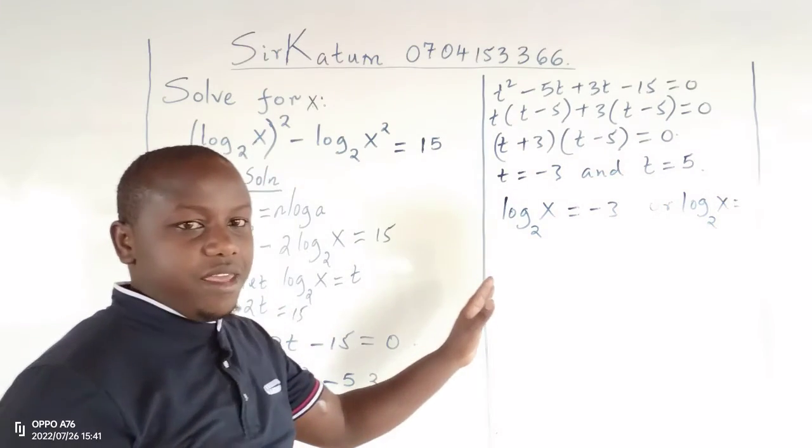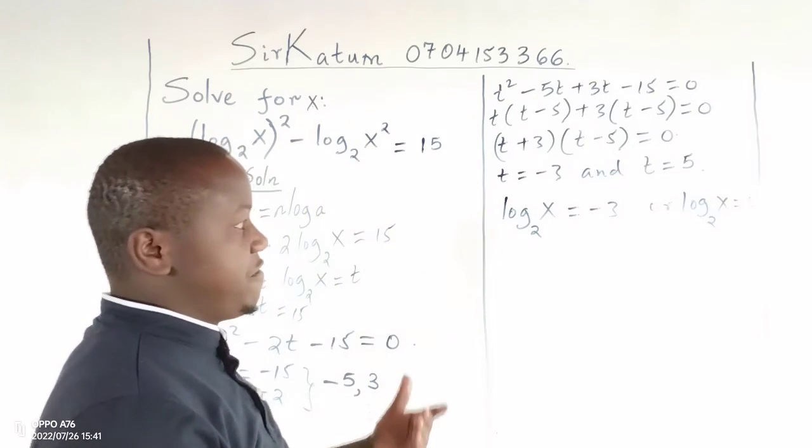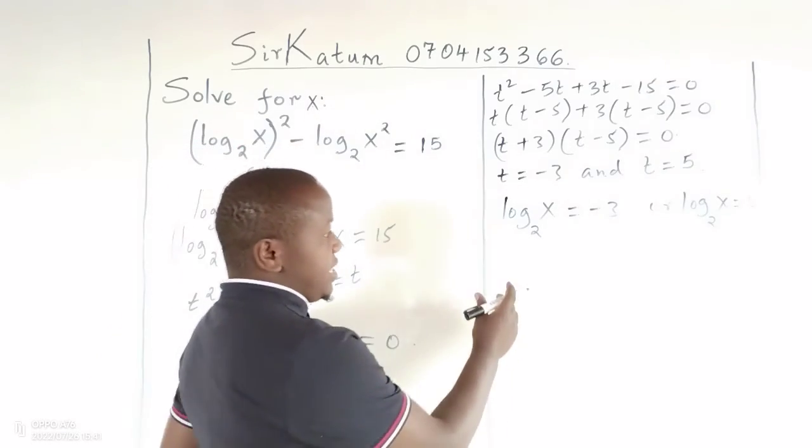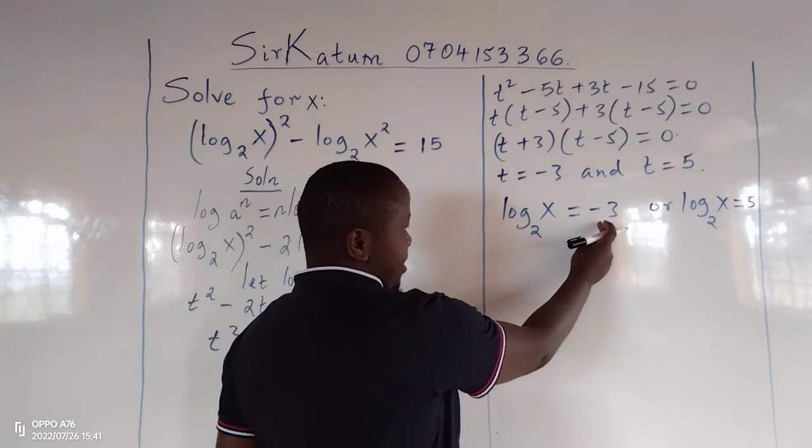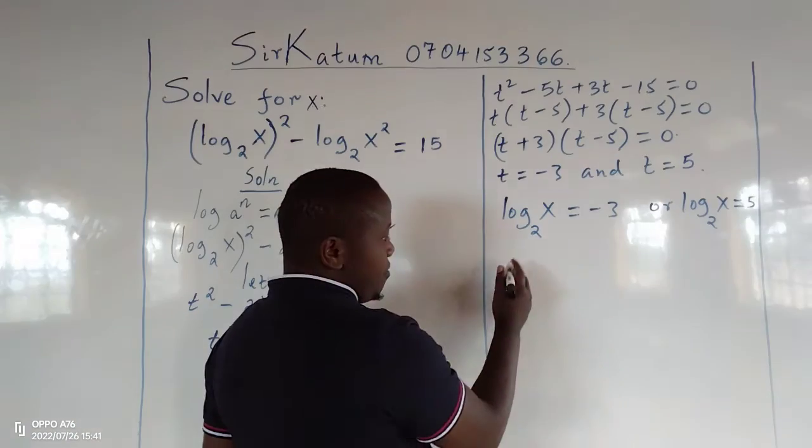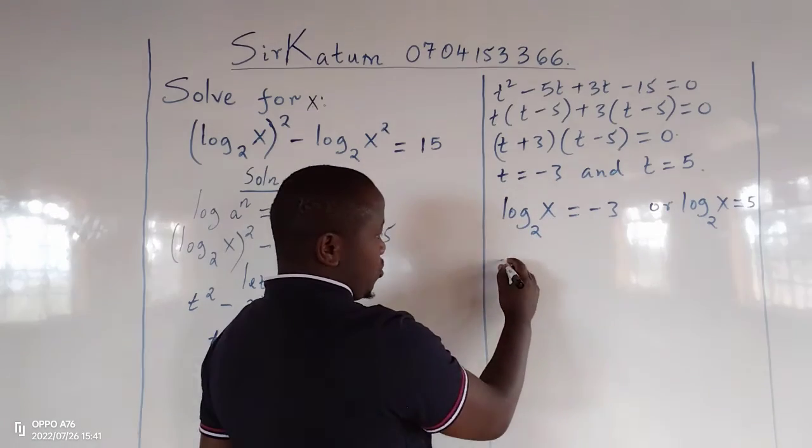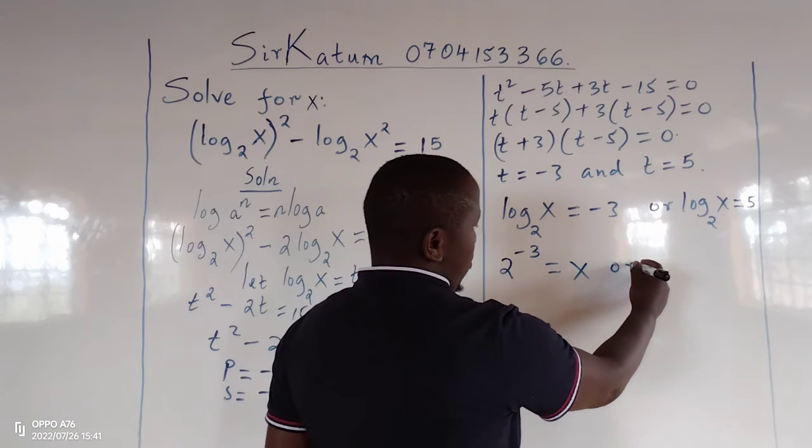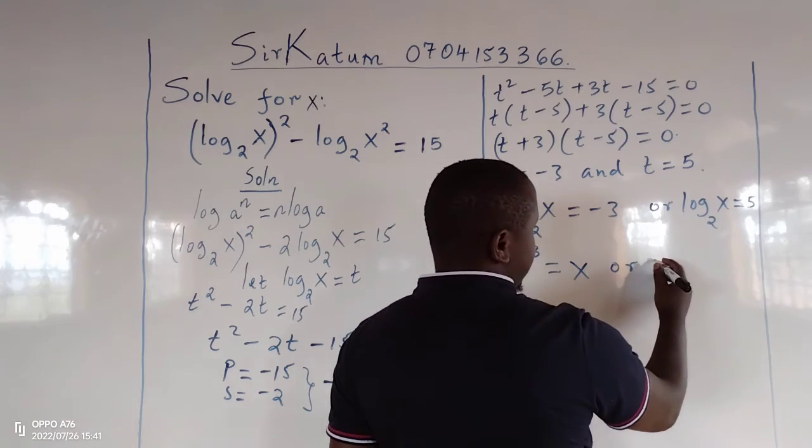So we have two logarithms of x to base 2, which we are now going to change from logarithm form. In index form, we will say 2 raised to negative 3 becomes x, or 2 raised to 5 should give us x.